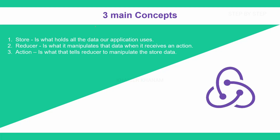These are the three main concepts: store, reducer, and action. Store is what? It holds all the data of our application. Reducer is what? It manipulates the data when it receives an action — so when I borrow the book, one book is getting reduced and reducer will perform that action. Action is what? It tells the reducer to manipulate the store data. Once the action is given, based on that action, reducer will manipulate that data, and that manipulated data will be sent to store. Our application is always subscribed to store, so whatever changes happen inside the store will be reflected inside the application as well.